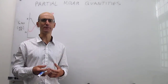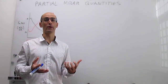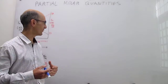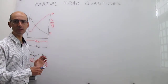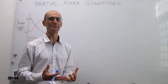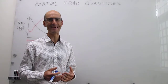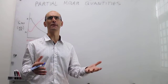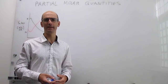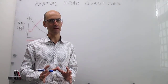What is the total enthalpy of a mixture? How do you take the enthalpies of the components and obtain the total enthalpy of the mixture? That's something we're going to develop in this video. Let's take volume to illustrate the concept of partial molar quantities. If we have a binary mixture of only two components, say A and B, then the total volume should simply be the volume of A plus the volume of B.